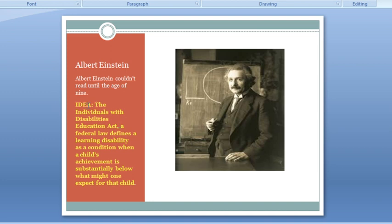You can see here on the left corner: IDEA — the Individuals with Disabilities Education Act — which is a federal law. They define learning difficulties as a condition when a child's achievement is substantially below what might be expected for that child. So it means the level of achievement is not performed at the expected level — that is called a learning disability.